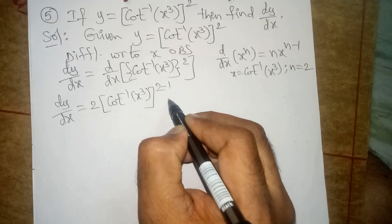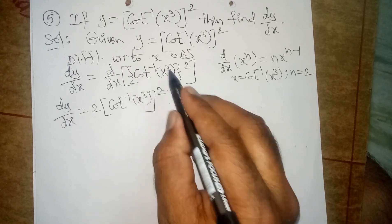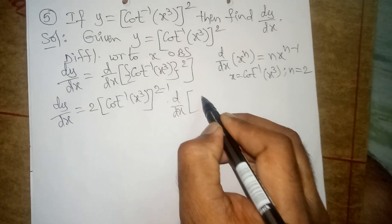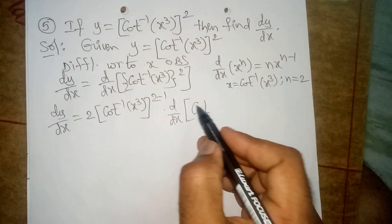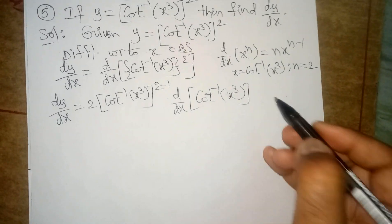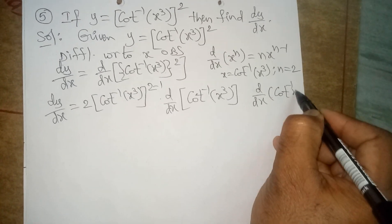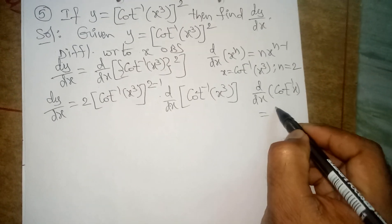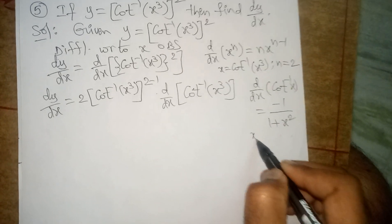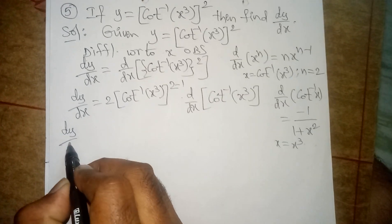Substituting, we get dy by dx is equal to first n value 2, into x — where x value is cot inverse x cube — whole power n minus 1, that is 2 minus 1. Coming to the bracket value, it looks like x but not exactly x, so we need the internal derivative, that means d by dx of cot inverse x cube. One more formula: d by dx of cot inverse x is equal to minus 1 by 1 plus x square.